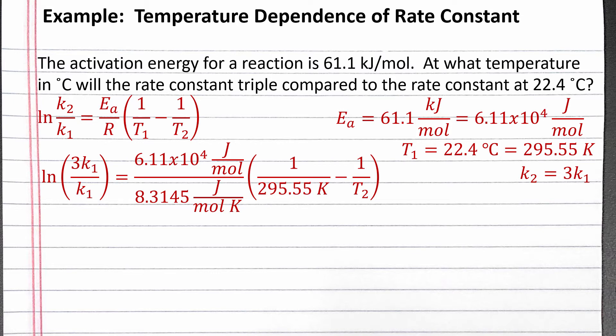The values of K1 will cancel out, and we're left with just the natural log of 3 on the left. If we put 6.11 times 10 to the fourth divided by 8.3145 into our calculator, we should get 7,348.6 as our coefficient outside the parentheses on the left. The units will be Kelvin since joules and moles cancelled.